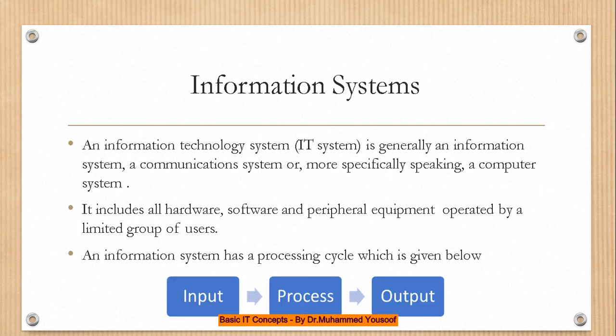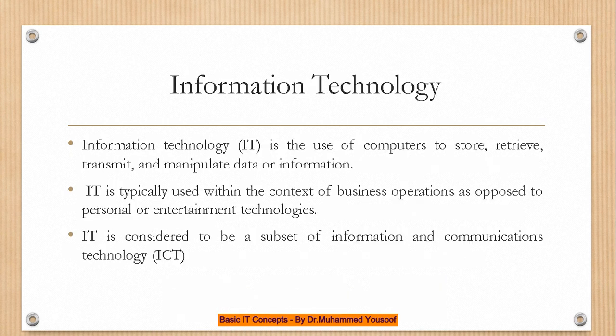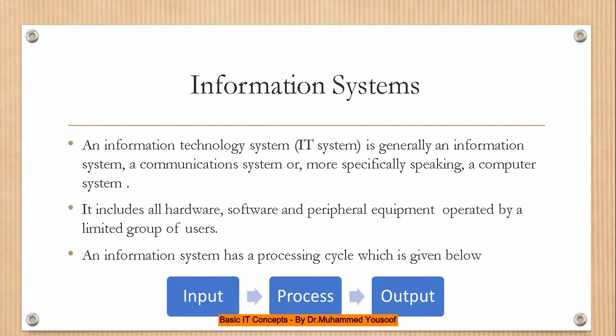Let's move to the next concept: information system. What is an information system? An information system — or IT system — is generally an information system, a communication system, or more specifically a computer system. Any system which uses a computer as a tool is called an information system. It includes hardware, software, peripheral equipment, and is operated by users. A system is a group of components — hardware, software, peripheral equipment, and users — all linked together.